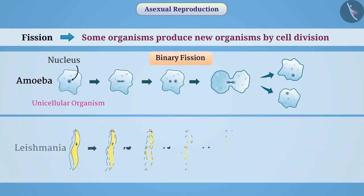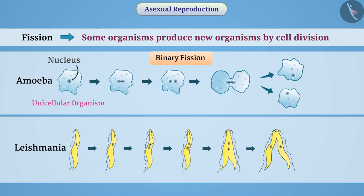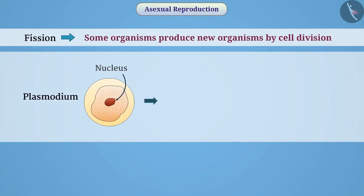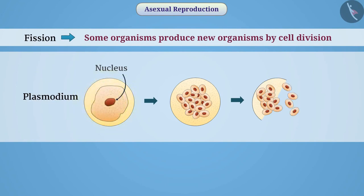Some unicellular organisms, such as Leishmania, have a more organized body structure. In such organisms, after the division of the nucleus, the cell divides from a fixed orientation. In some organisms, such as the malaria parasite Plasmodium, one cell divides into several cells — we call this multiple fission.